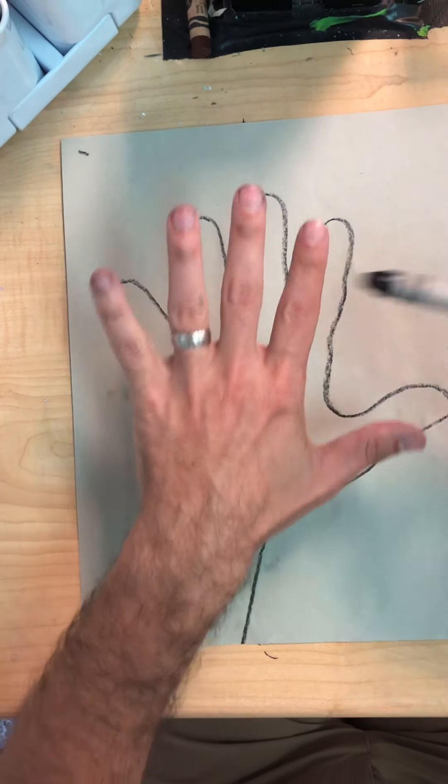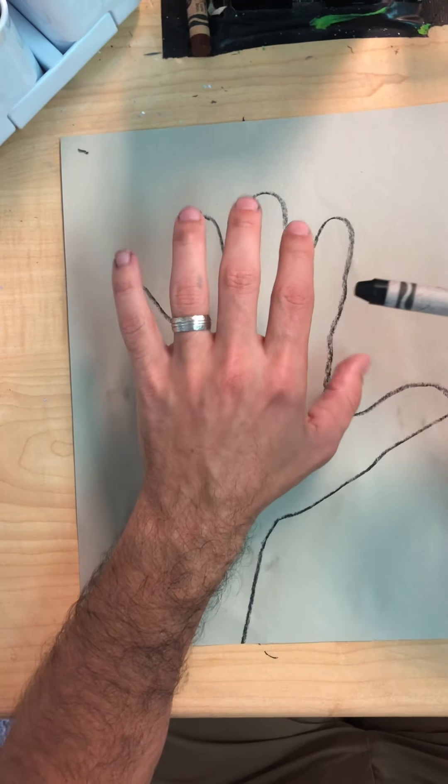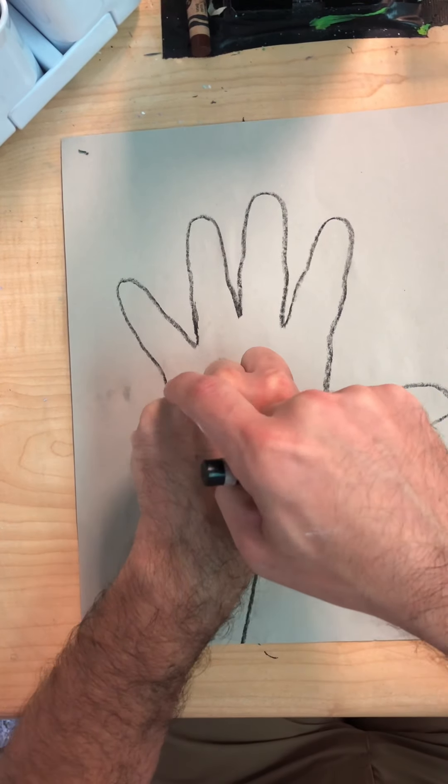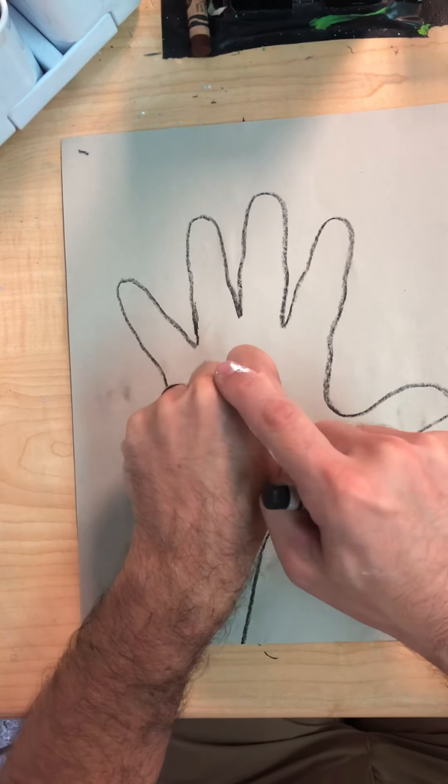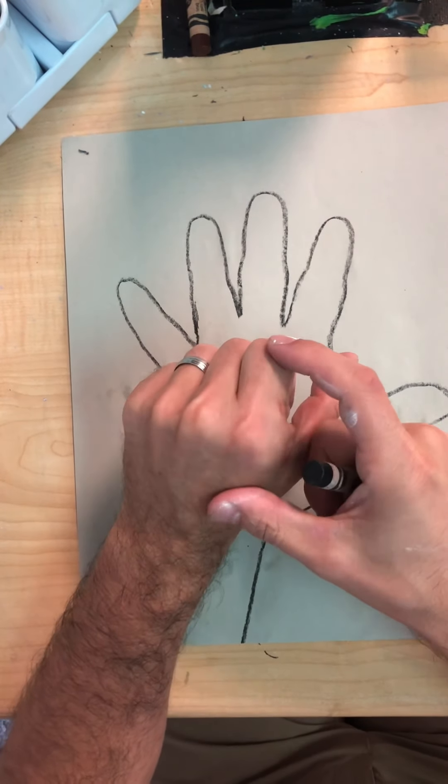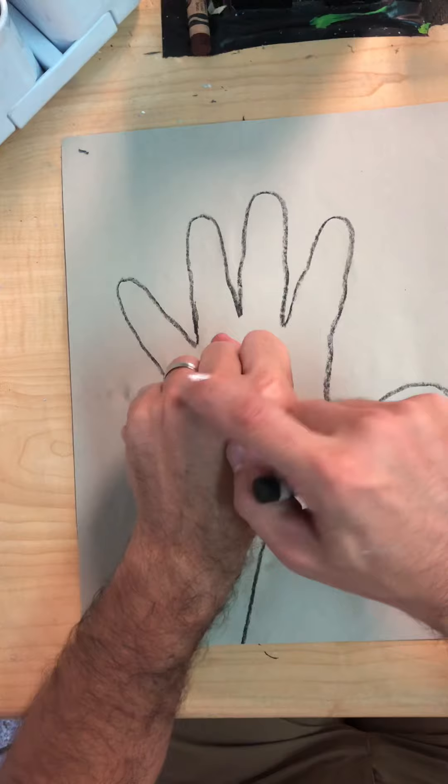The first thing I want to point out to you are your knuckles. When you close your fist, you'll feel the hard, bony, bumpy part that pushes out. These are called your knuckles. Knuckles are where two bones join together and form a joint.